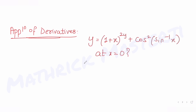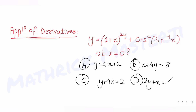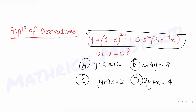The answer choices are: option A, y = 4x + 2; option B, x + 4y = 8; option C, y + 4x = 2; and option D, 2y + x = 4. We need to figure out what is the equation of the normal to this curve at x equals 0, so let's solve this.